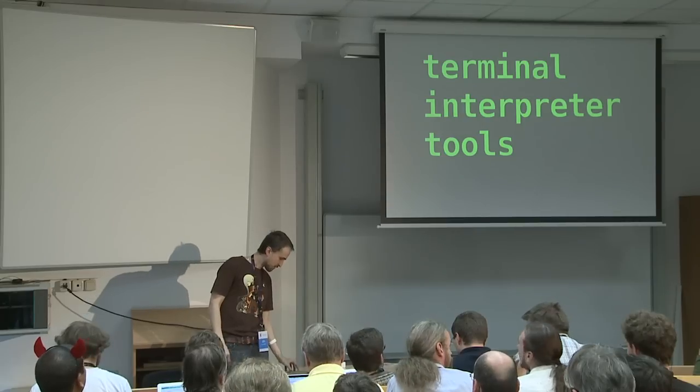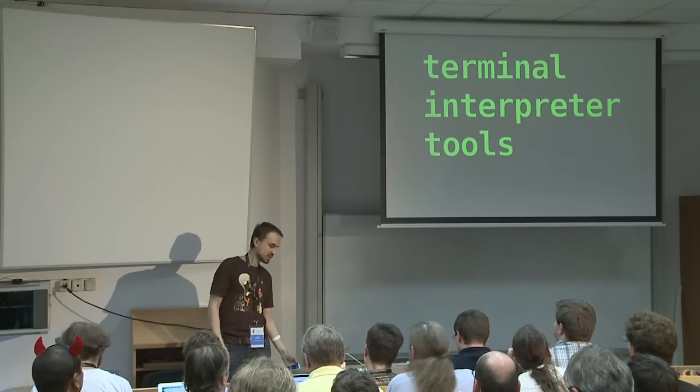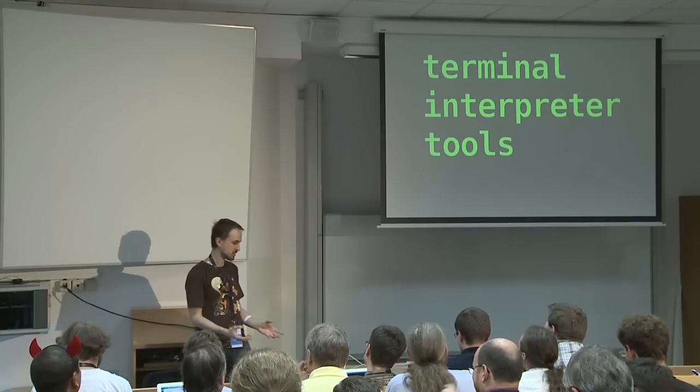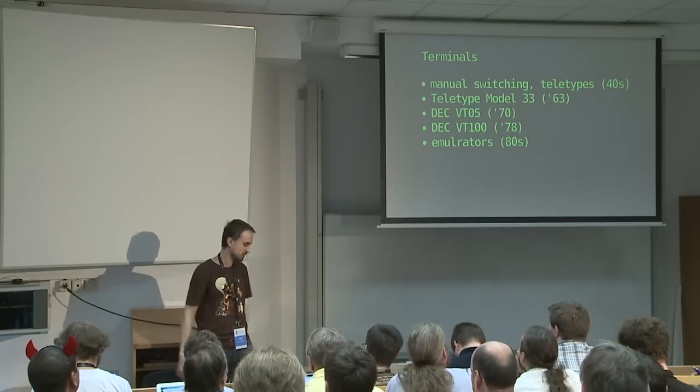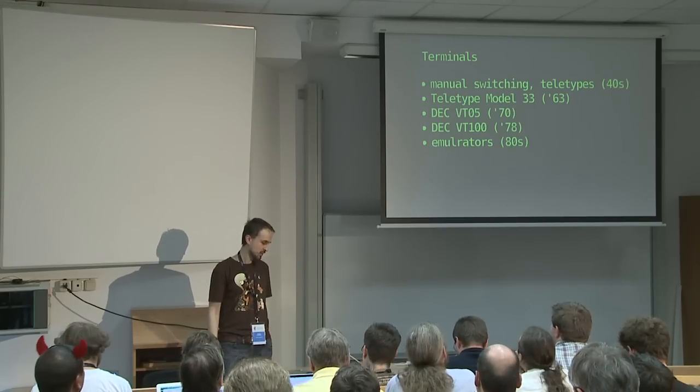Back to CLI for a while. What is it defined by? The basic objects are: the terminal or any kind of media device, the interpreter, and the tools you use through the interpreter. Looking at terminals: from the start of electronic computers in the forties they used manual switching, punch cards, and basic teletypes. Then in '63 the revolutionary Teletype Model 33 came around, which was really cheap — about 10 times cheaper than anything in its class, just $700 for a keyboard — and it revolutionized access to computers.